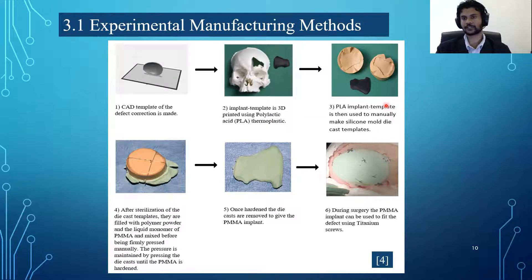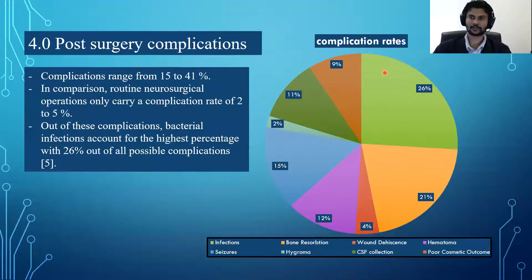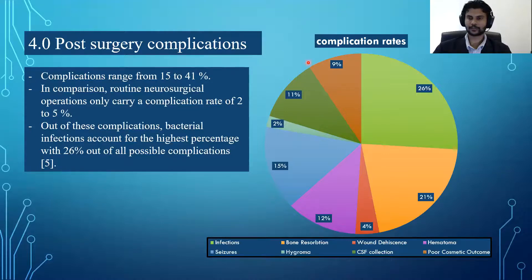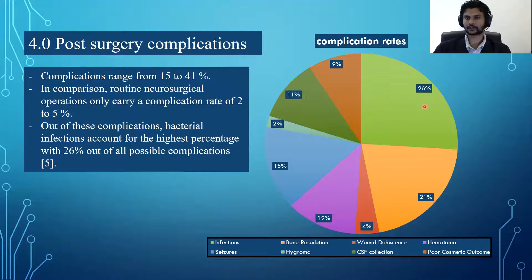Despite all these amazing materials and manufacturing methods, there is one huge problem: the complication rate. The complications rate goes up to a staggering 41 percent — compared to most neurological procedures which go up to five percent at most. On the surface this procedure seems simple since we are just filling a hole in the skull, but complications range from cerebrospinal fluid accumulating in the skull to seizures. Out of all of them, the one with the highest occurrence is bacterial infections, which raises the question of how to overcome such high infection rates — and that is where my final year project comes in.